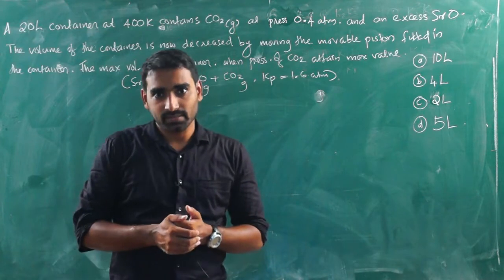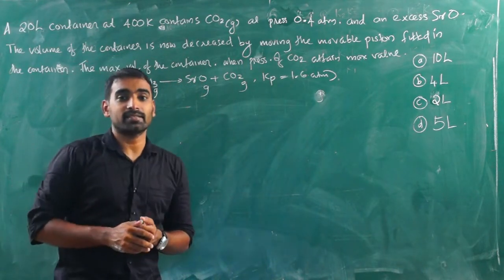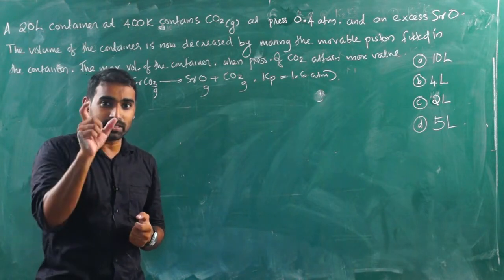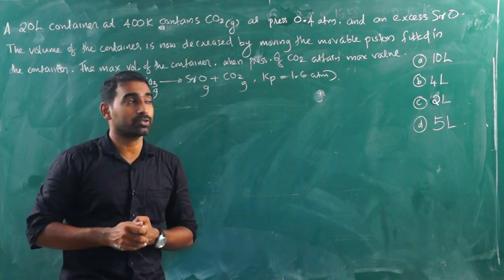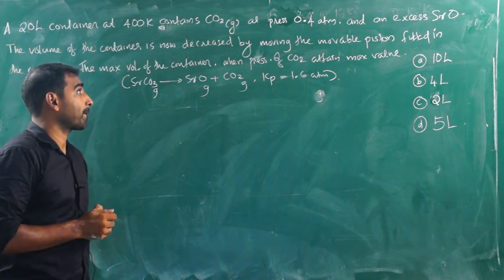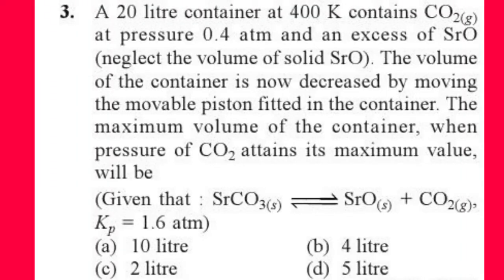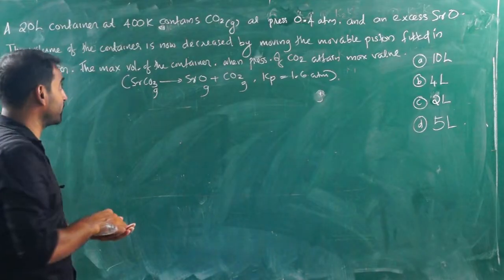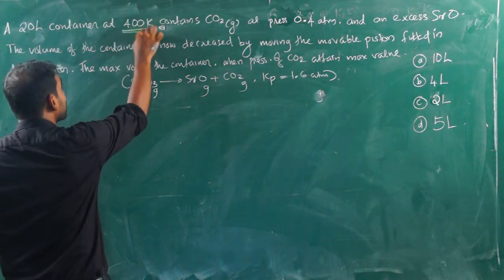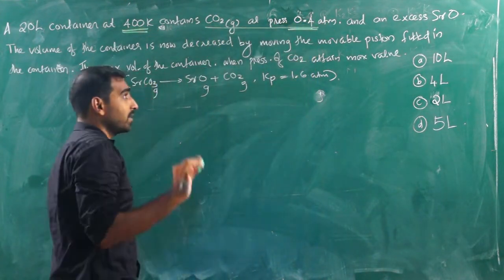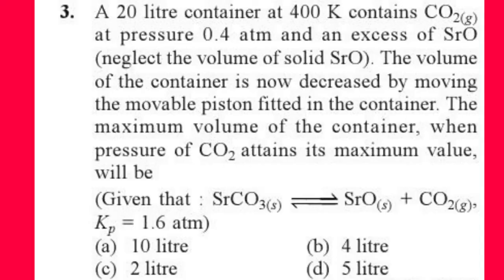Hi dear students, physical chemistry equilibrium, states of matter — going through previous objectives for competitive examinations. A 20-liter container at 400 Kelvin contains CO₂ gas at a pressure of 0.4 ATM, with excess SrO present.